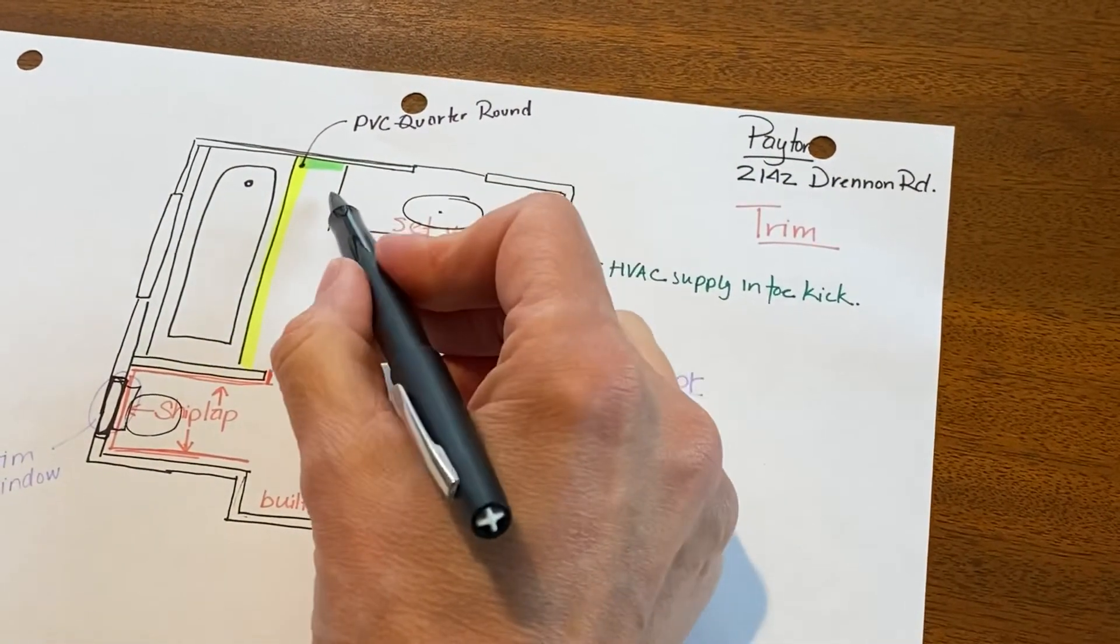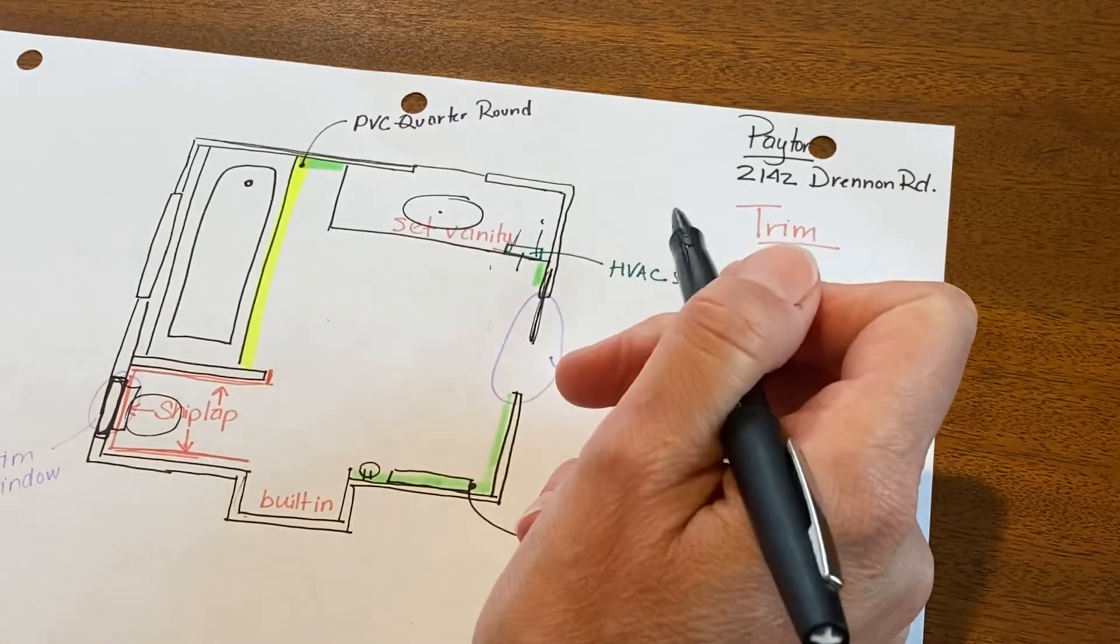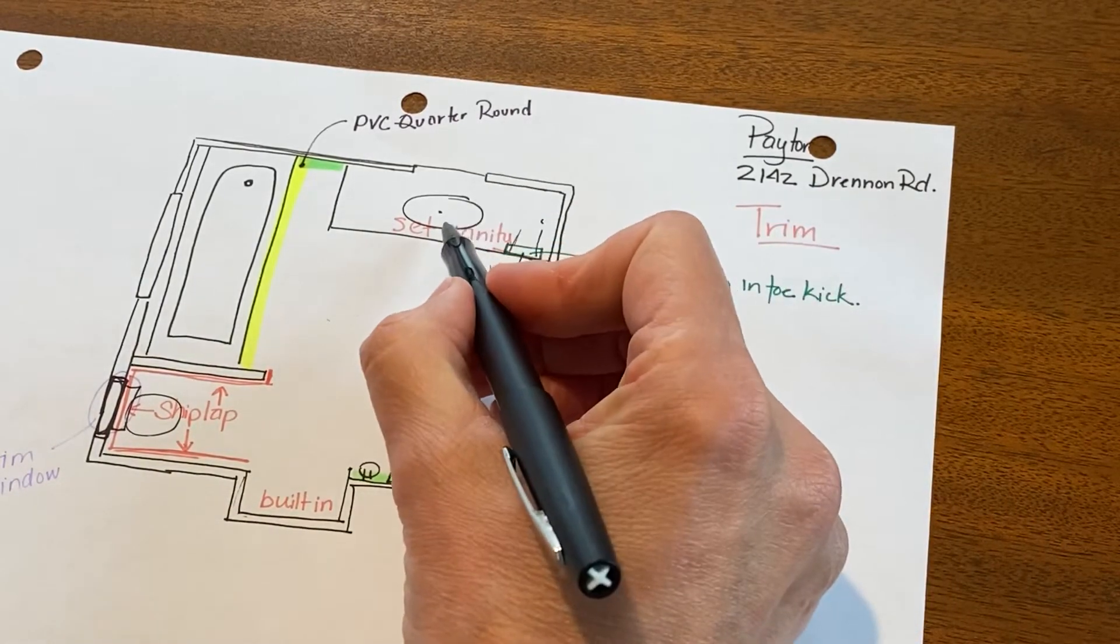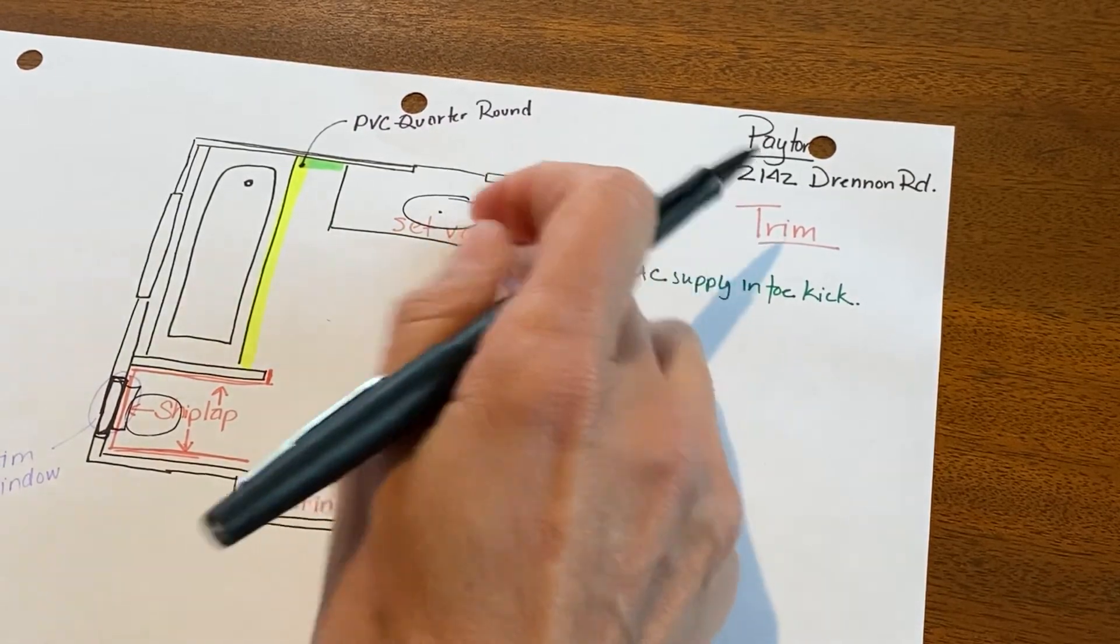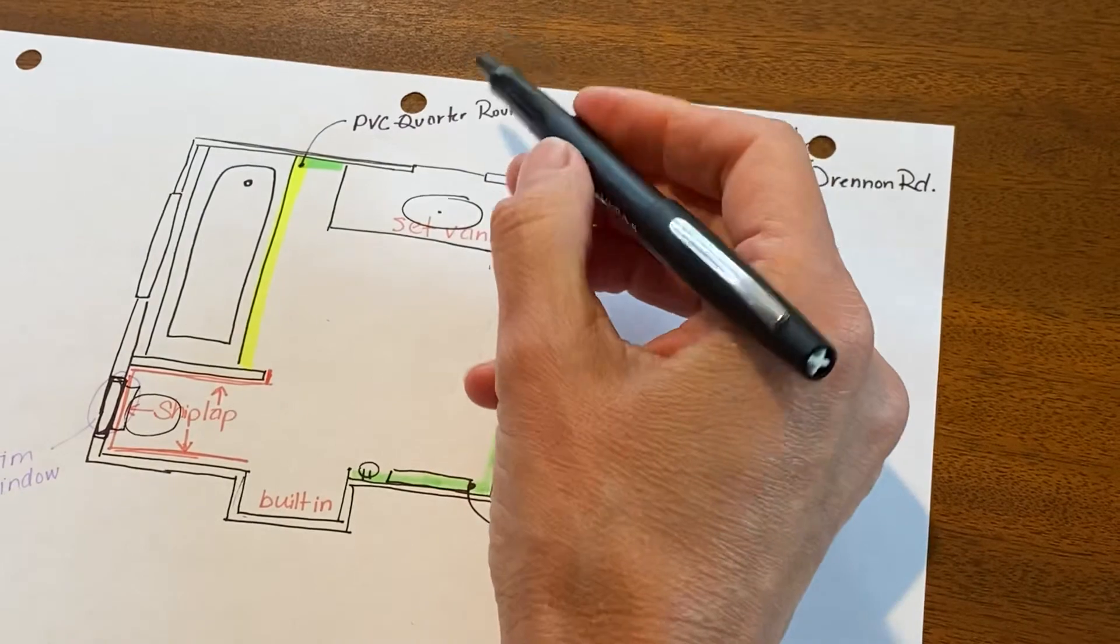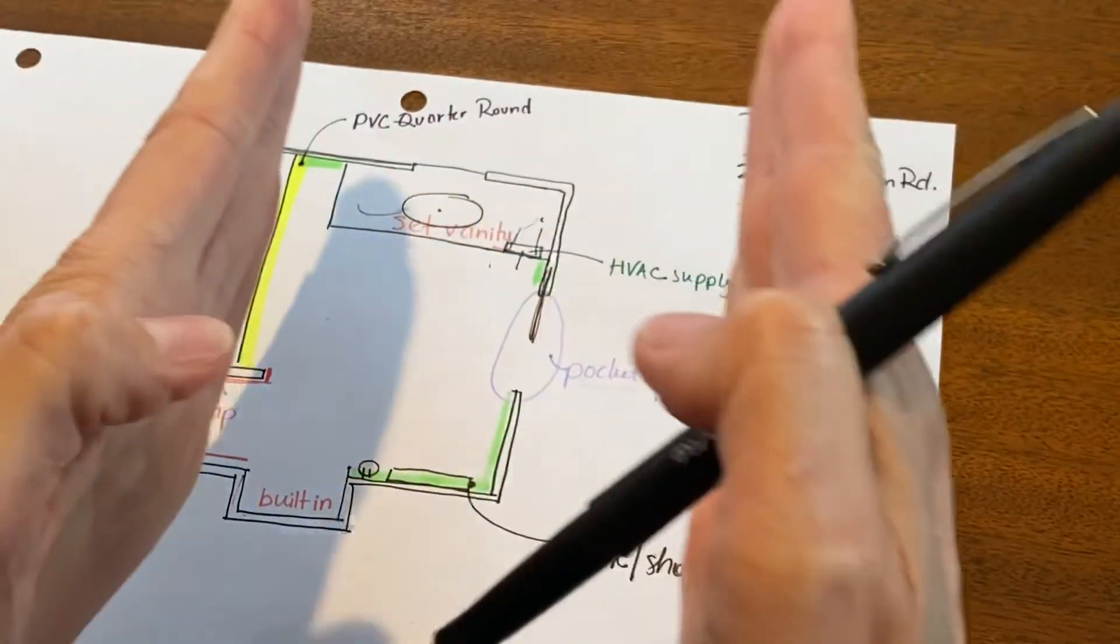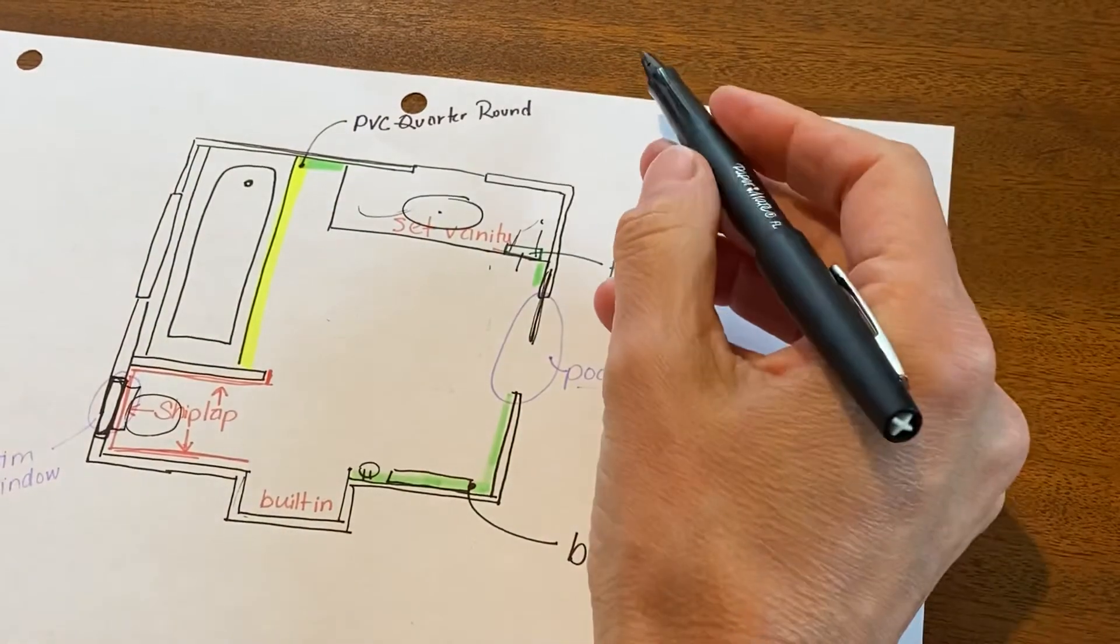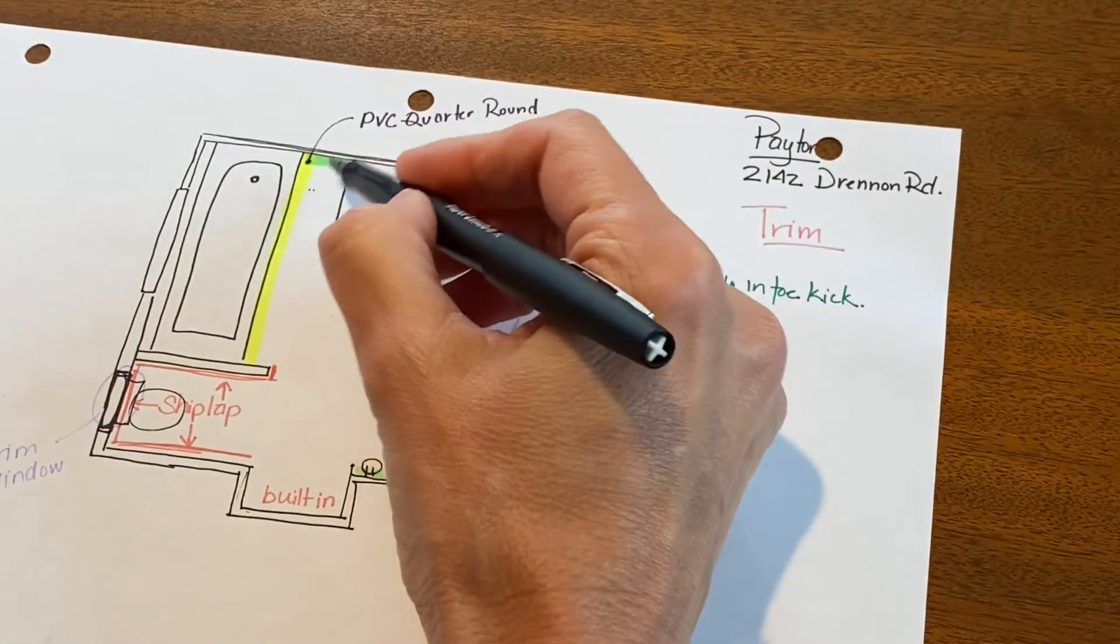We made the vanity as big as we could—I can't remember what it ended up being off the top of my head, but it was a pretty good-sized vanity—and we just did one sink so that they would have counter space. If we had put two sinks in here, they would have had a tiny little piece of counter space, and she was not interested in that.